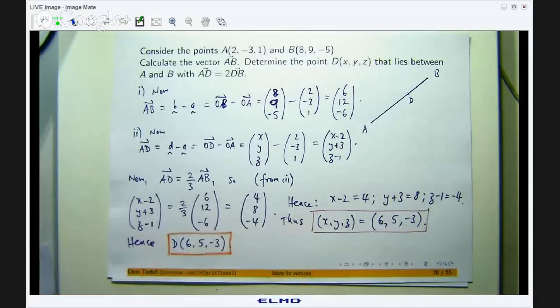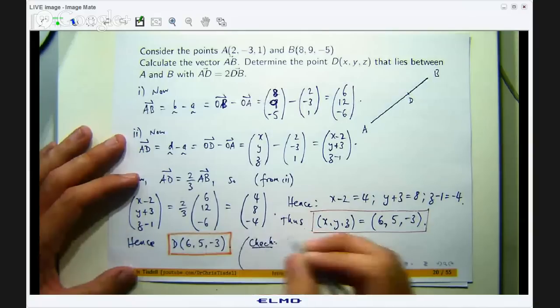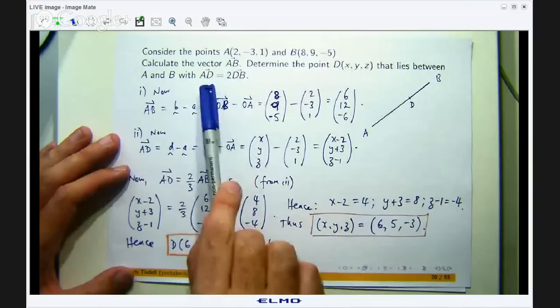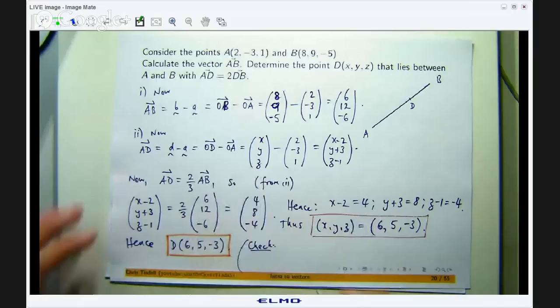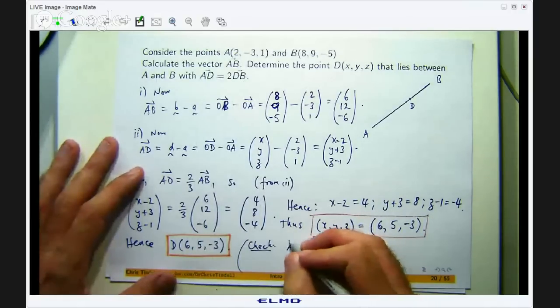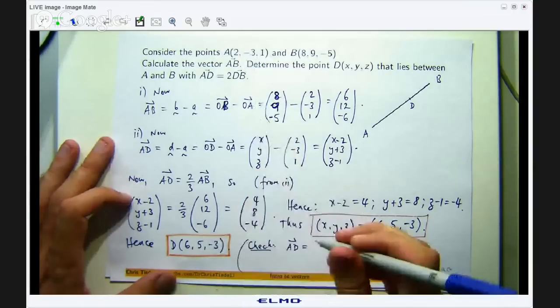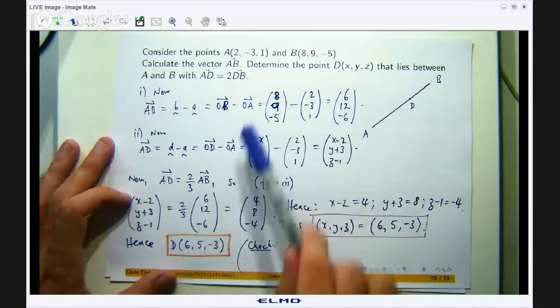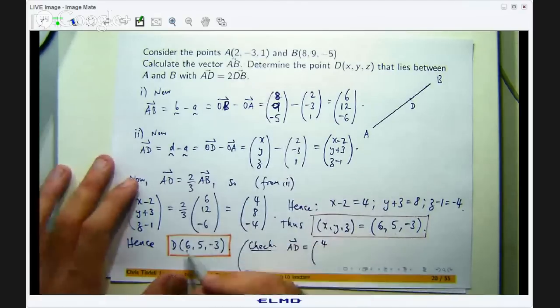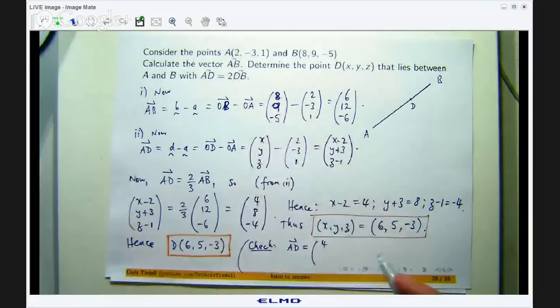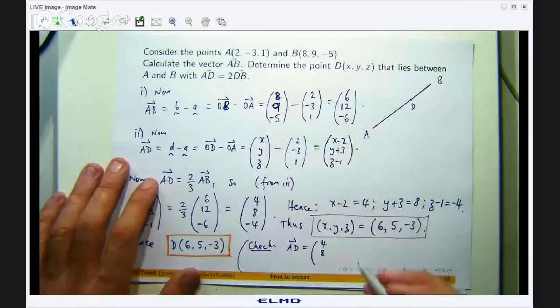Okay. So how do I know I am right? Well, what I can do is check. What I am trying to come up with is the coordinates of D such that AD equals 2 times DB. So if that is my point D and that is my point A, AD is just going to be the position vector of D minus the position vector of A. So I will not repeat all the steps there. So it is 6 minus 2, 5 minus negative 3, which is positive 8, negative 3 minus 1, which will be negative 4.